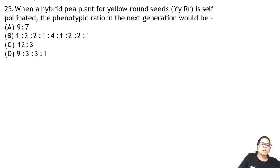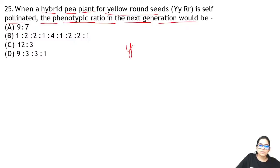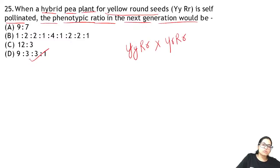Question 25: when a hybrid pea plant of yellow round seeds is self-pollinated, the phenotypic ratio in the next generation would be — this is a normal dihybrid cross. The phenotypic ratio of a dihybrid cross is 9:3:3:1. It is a dihybrid and the question asks for phenotype.